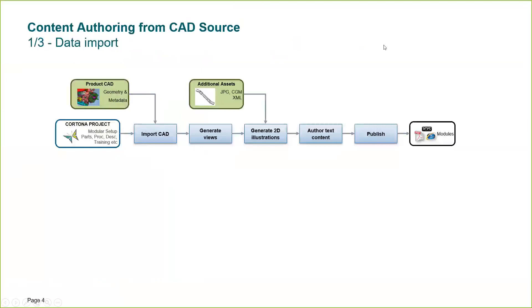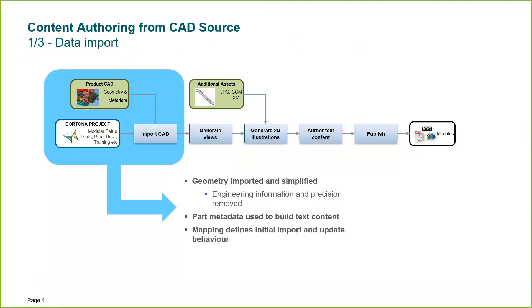The topic for today is on creating content. I'm going to dive into the demonstration very swiftly, but I just want to introduce the overall workflow. The first part I'm going to show you is using some CAD data that already has metadata on it — part numbers and descriptions. We're going to create a Cortona project, import that CAD data, create a parts catalog based on that data, and then do the publishing process.